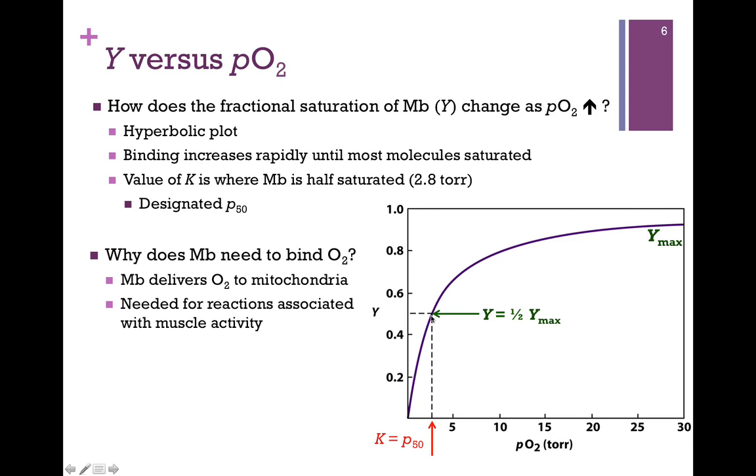Our equilibrium constant is at that halfway point, our one-half Y max. That's where it's half saturated. So that's our equilibrium constant. We call that the P50, because it's the partial pressure of oxygen where myoglobin is half, or 50% saturated. Notice how low that value is. It's 2.8 torr. So remember, the lower the value, the higher the affinity. So this means myoglobin has a very high affinity for oxygen, even at low concentrations.